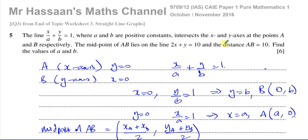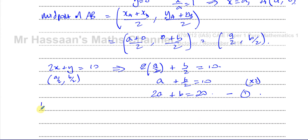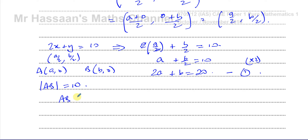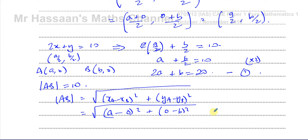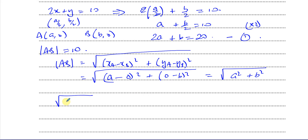We're also told the distance between A and B equals 10. Using the distance formula (Pythagoras), with A = (a, 0) and B = (0, b), we get √[(a − 0)² + (0 − b)²] = √(a² + b²) = 10. Squaring both sides gives equation 2: a² + b² = 100.